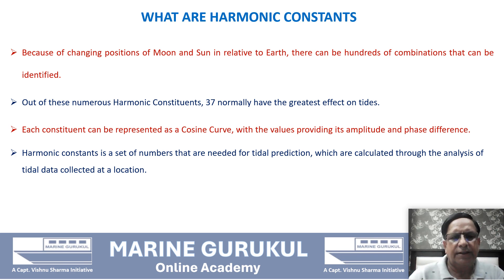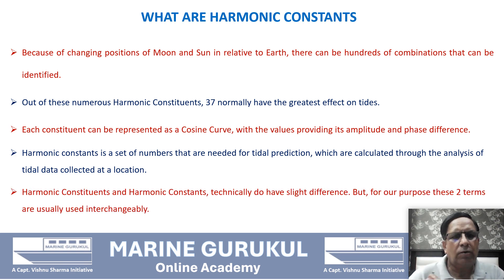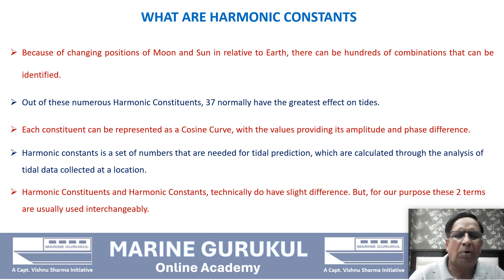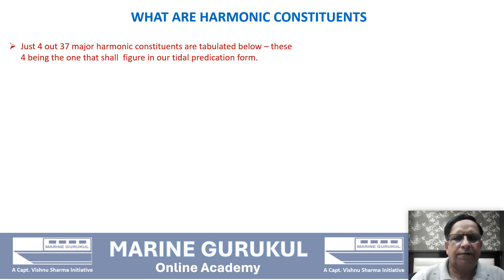A harmonic constant is a set of numbers needed for tidal prediction, calculated through analysis of tidal data collected at a location. Harmonic constituents and harmonic constants technically have a slight difference, but for our purposes these two terms are generally used interchangeably. Out of 37 major harmonic constituents, just four are tabulated — these four will also appear in the table we shall use when computing tidal heights using the harmonic constant method.